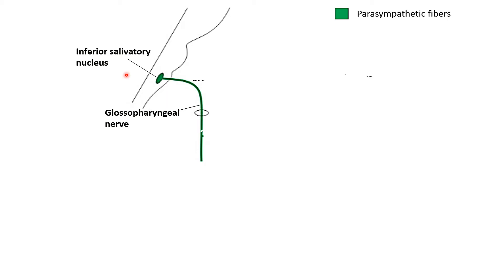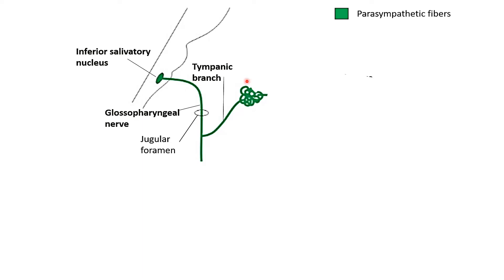The inferior salivatory nucleus contains the preganglionic secretomotor fibers, which traverse through the glossopharyngeal nerve. The glossopharyngeal nerve leaves the cranial cavity through the jugular foramen and then gives a branch called the tympanic branch. This branch re-enters the base of skull through the tympanic canaliculus into the middle ear cavity, where it forms the tympanic plexus on the medial wall.